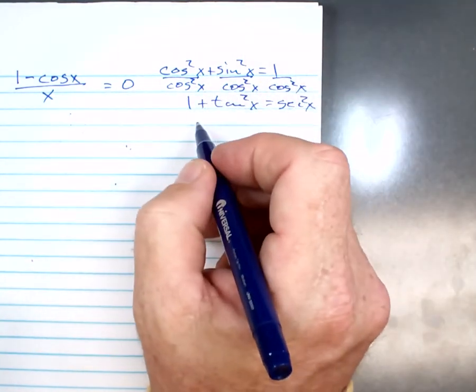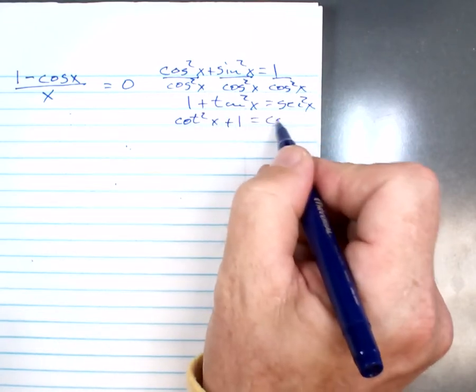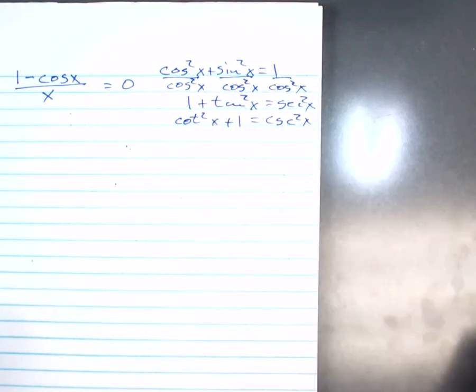And I can do the same thing with sine, and I can get cotangent squared x plus 1 equals cosecant squared x. Did I go through that too fast?